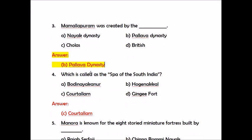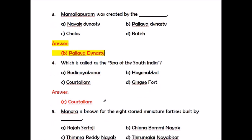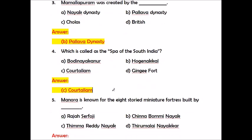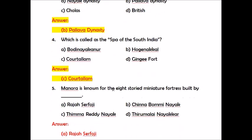Question number four: Which is called as the spa of South India? Options are Bodhi Naikanoor, Huggenekkal, Kutralam, Jinji Fort. The answer is Kutralam — Kutralam is called as the spa of South India.